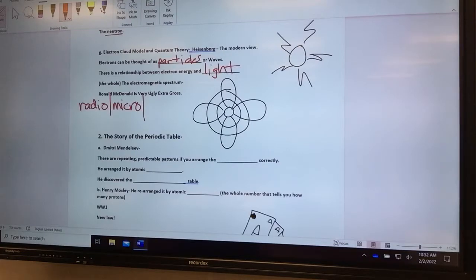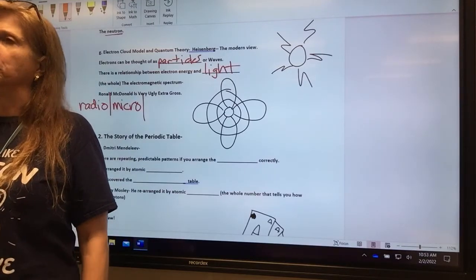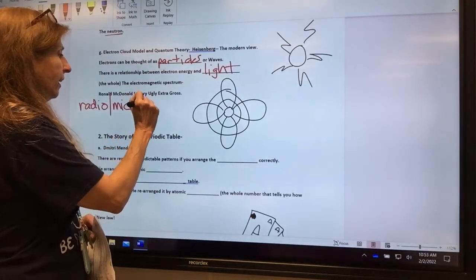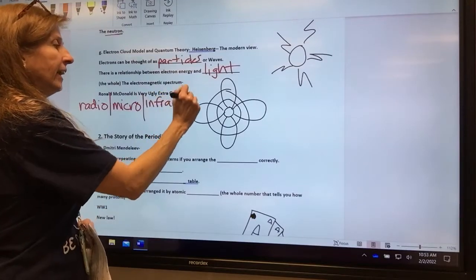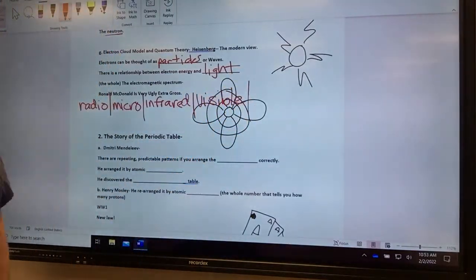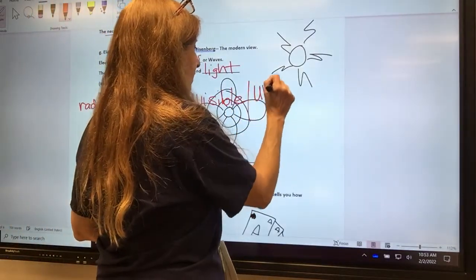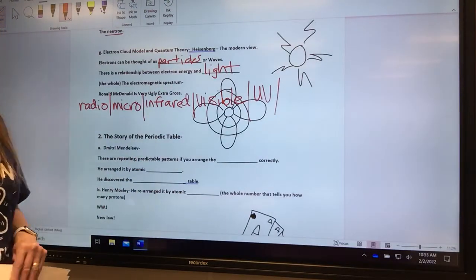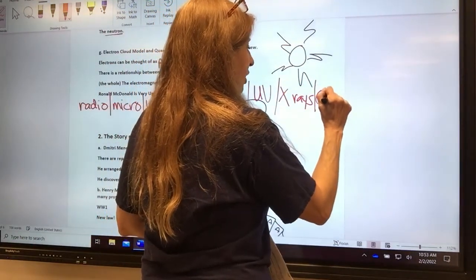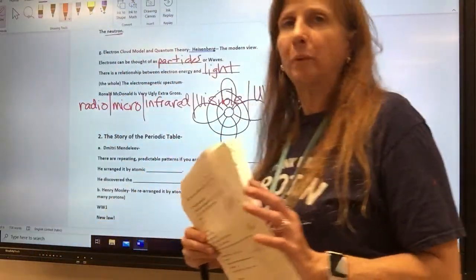McDonald is microwaves. And that's what your phone works on. Some people think microwaves can cause cancer. And now we got them on our phones right up by our ear. So Ronald McDonald is infrared. That's heat, heat energy. Very is visible. That's Roy G. Biv, the rainbow. Ugly is UV. So that's what tans your skin and gives you skin cancer. And then extra is x-rays. And gross is gamma rays. You know what turns Bruce Banner into the Hulk? Gamma.